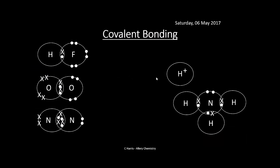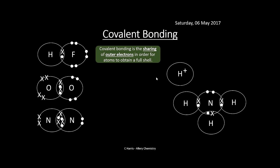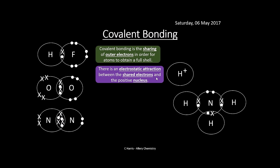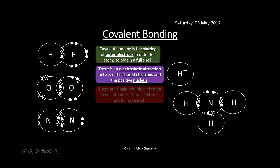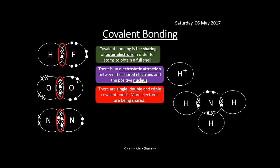Covalent bonding is another type of bonding — a little bit trickier. Covalent bonding is the sharing of outer electrons. It's similar to ionic bonding in getting a full shell, except we're sharing electrons, not giving or receiving them. There is still an electrostatic attraction — this time between the shared electrons and the positive nucleus in the middle. We can get single, double, and triple bonds — sharing one, two, or three pairs of electrons respectively. Covalent bonds can also be represented by lines in a displayed formula.